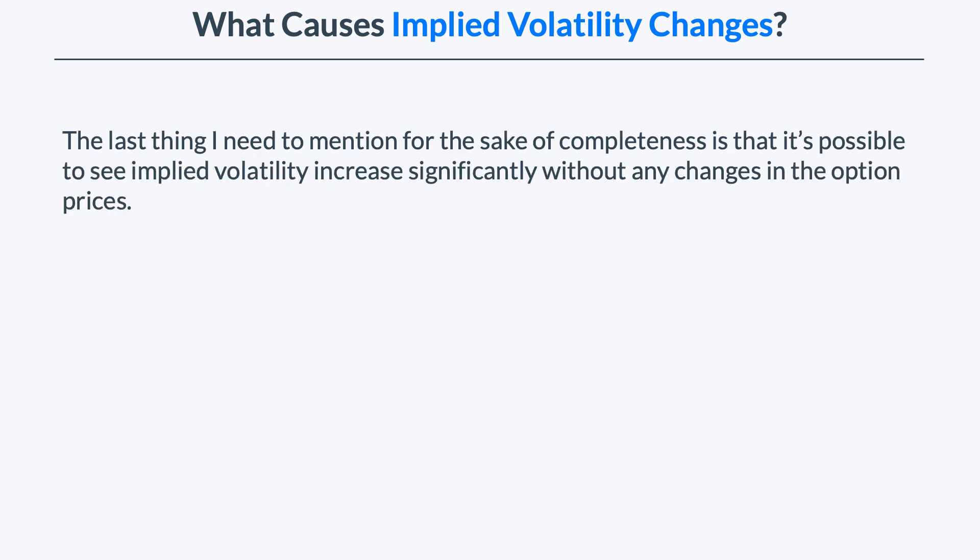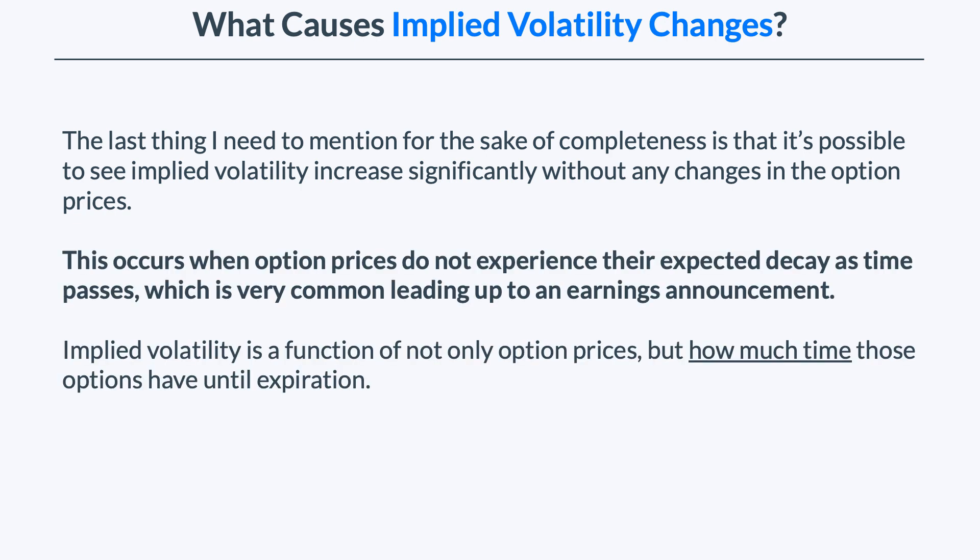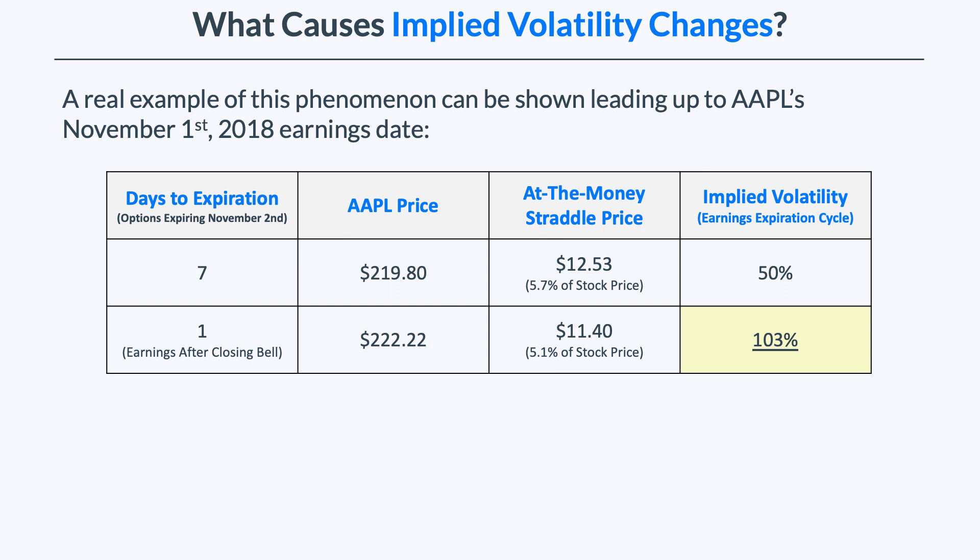For completeness, it's possible to see implied volatility increase significantly without any changes in option prices. This occurs when option prices do not experience their expected decay as time passes, which is very common leading up to an earnings announcement or anything that has the potential to result in a significant stock price movement in either direction. Implied volatility is a function of not only option prices, but how much time those options have until expiration. A great example can be seen by looking at Apple's November 1st, 2018 earnings date and the days leading up to that announcement.